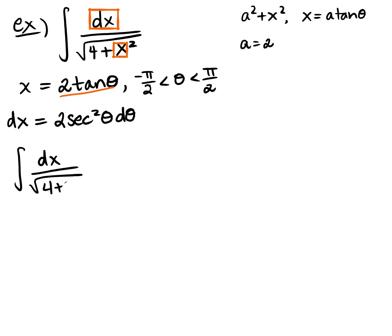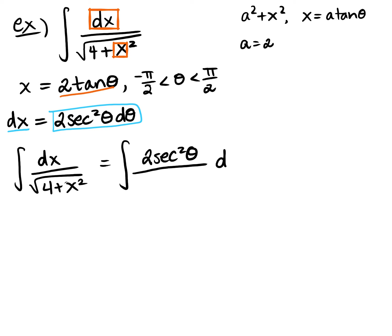So let's do the substitution. dx becomes 2·sec²θ·dθ. The denominator 4 plus x² becomes 4 plus (2·tanθ)² — and squaring that, don't forget you must square the 2, giving 4 plus 4·tan²θ.